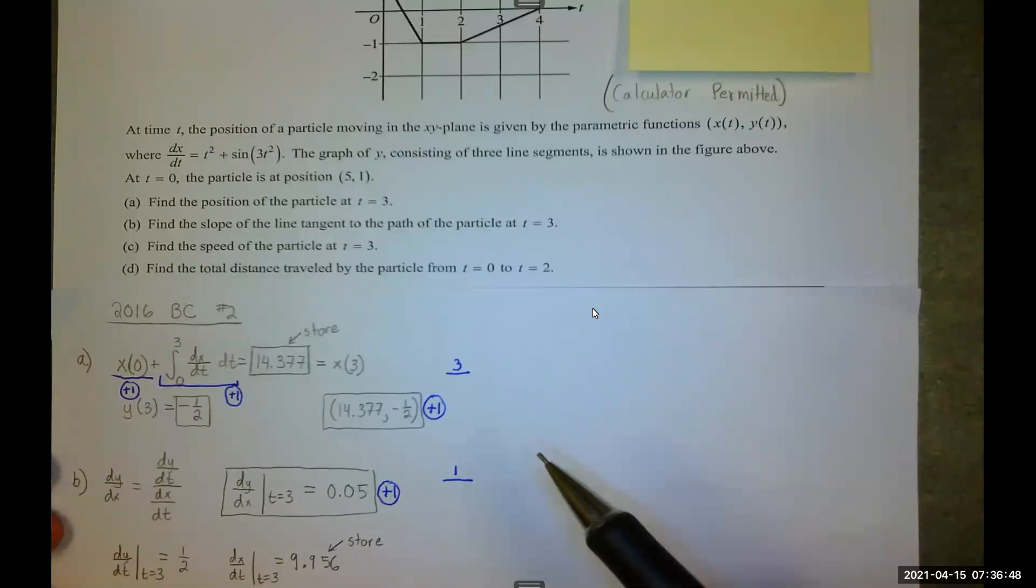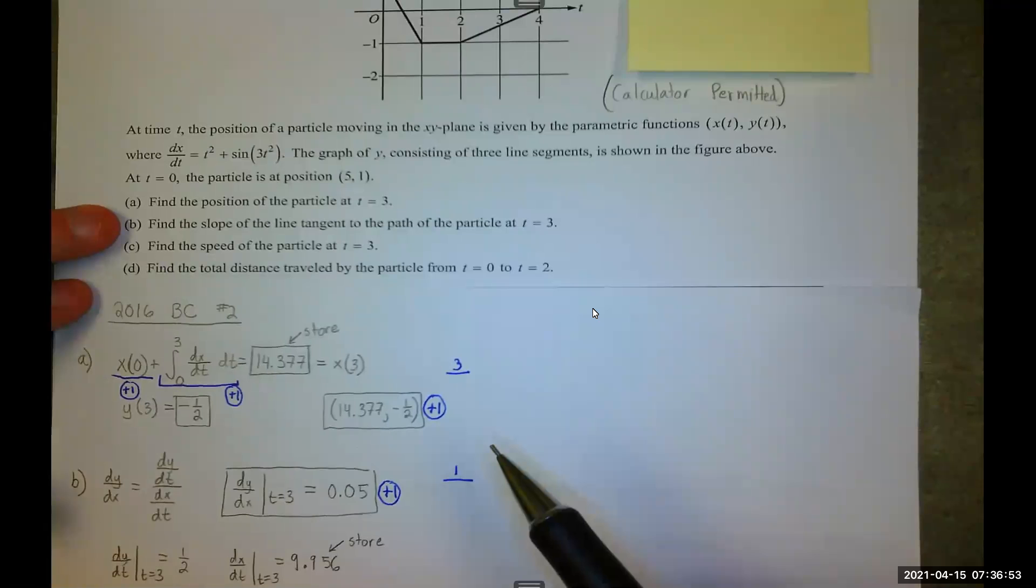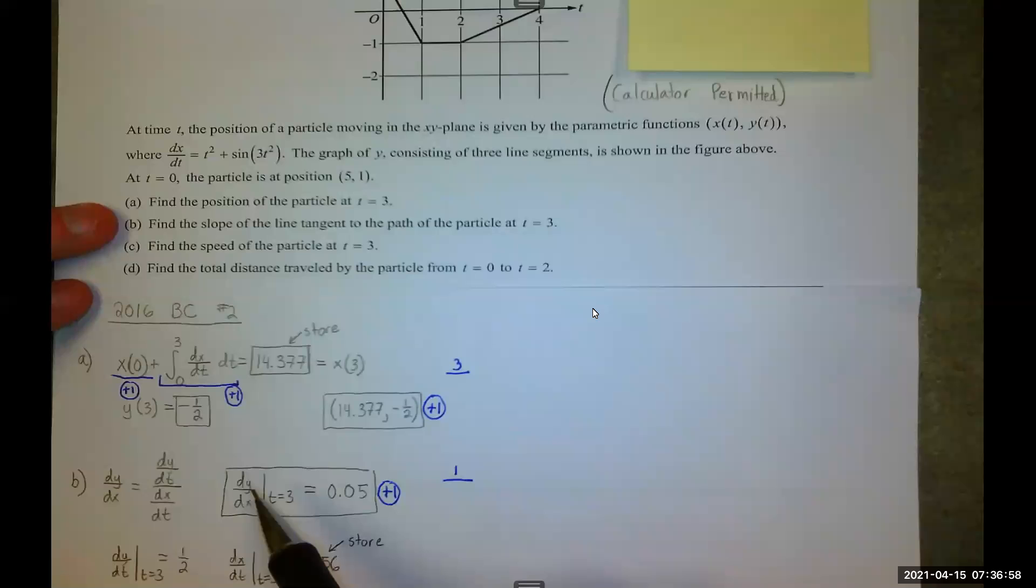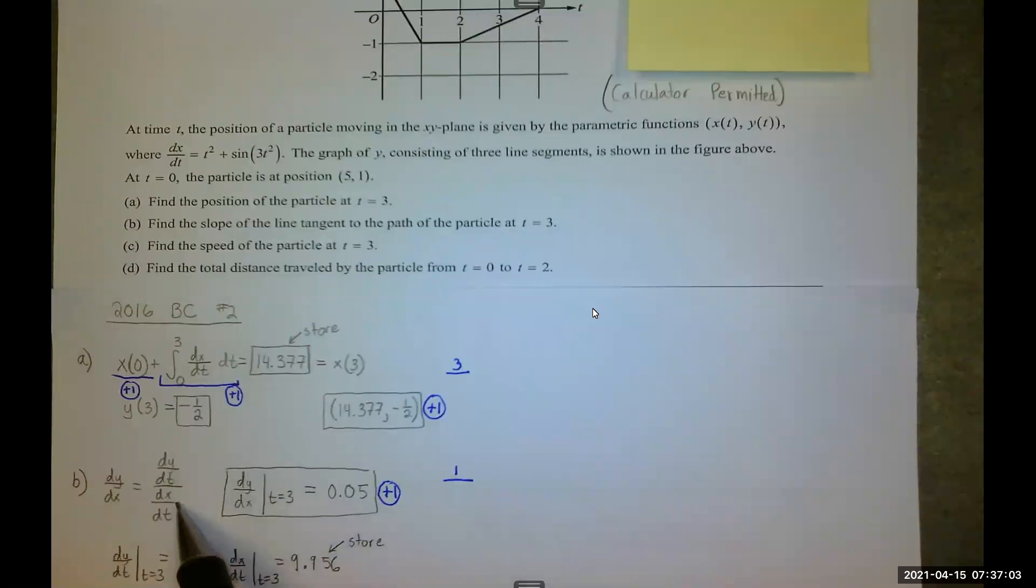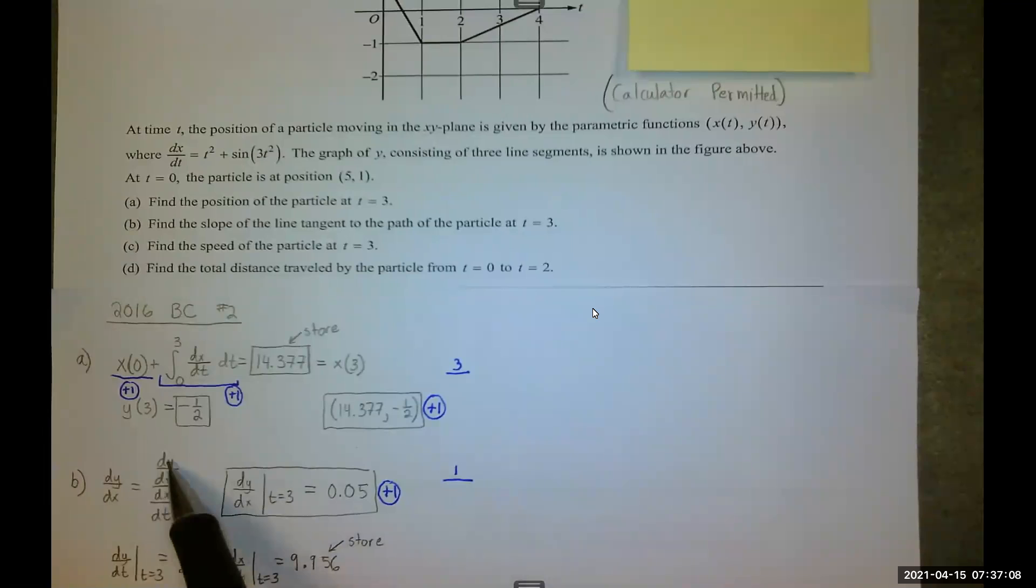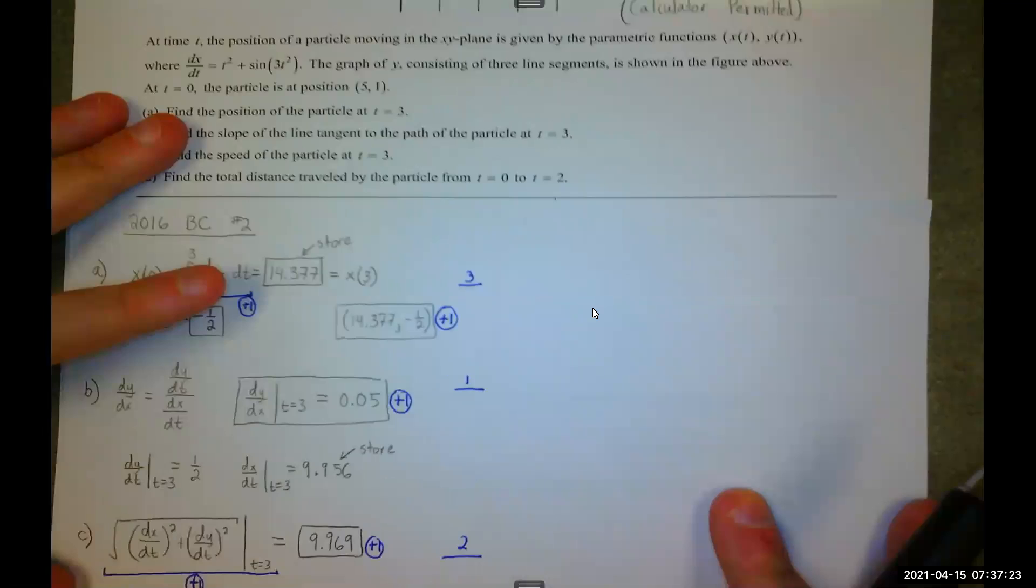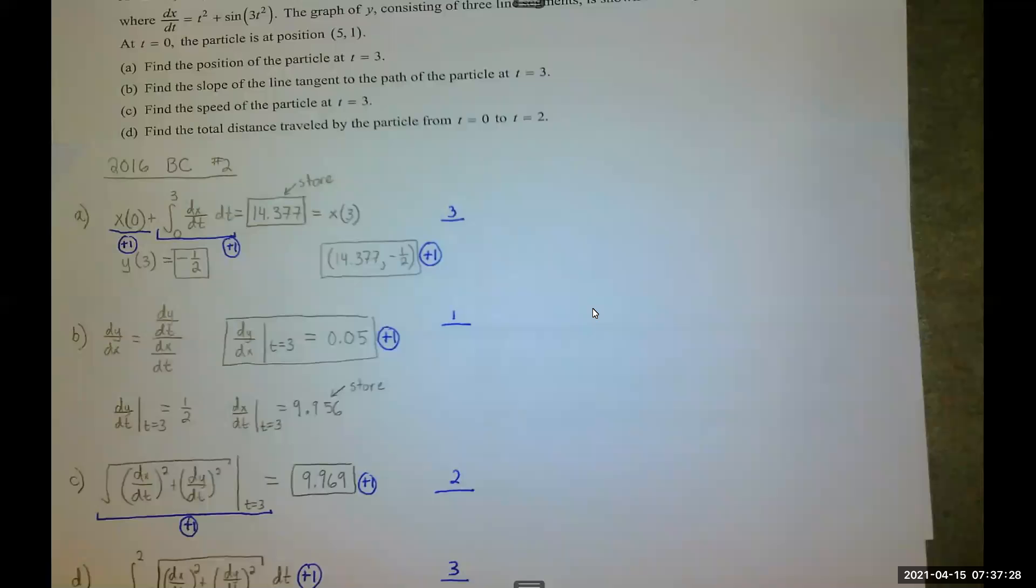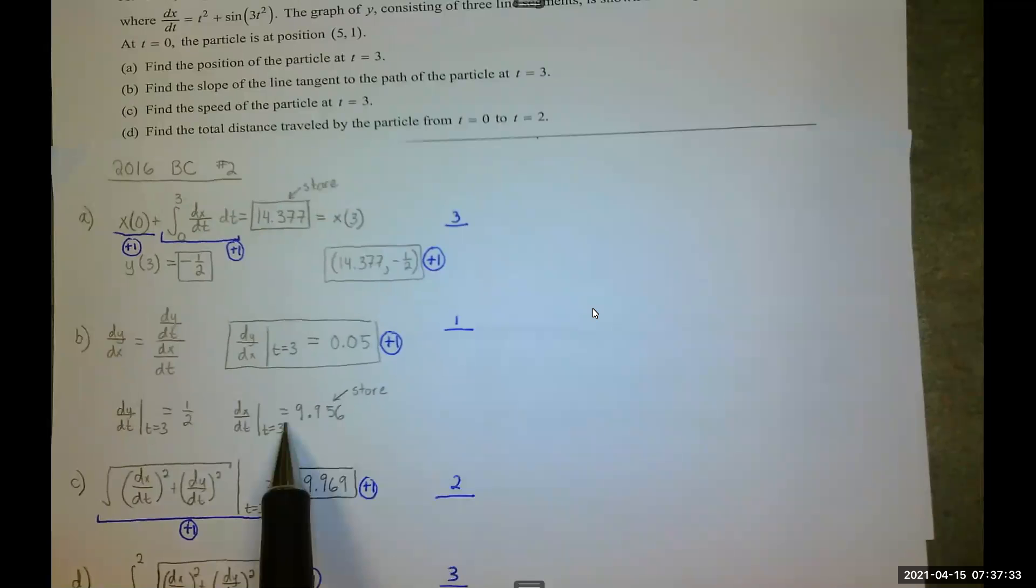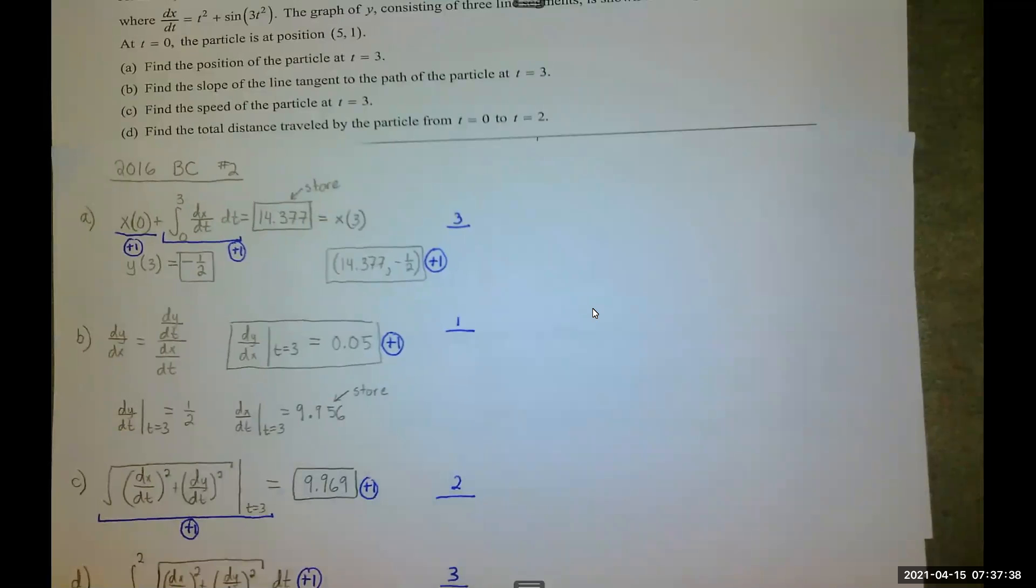Moving on to part B, we need to find the slope of the line tangent to the path of the particle. Hopefully my long introduction reminded you that we're talking about dy/dx, which in this case means I need the ratio of dy/dt divided by dx/dt. If you have forgotten about this, just think about some quick algebra. If you were to multiply dy/dt by the reciprocal of dx/dt, the dt's would make 1 their common factors in the numerator and denominator, and then you'd have dy/dx. So the value is 0.05 and I got that by evaluating dy/dt at 3. And this time I did have to use the calculator 9956. And then I stored that, got 0.05.